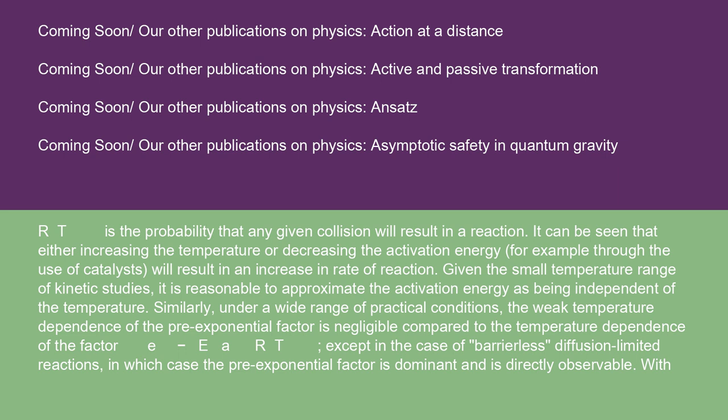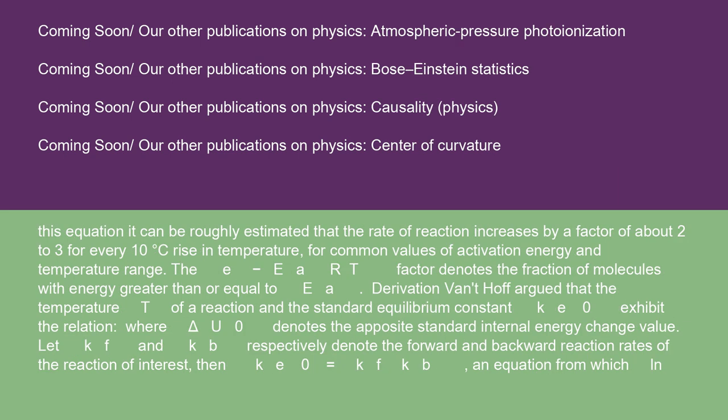It can be seen that either increasing the temperature or decreasing the activation energy, for example, through the use of catalysts, will result in an increase in rate of reaction. Given the small temperature range of kinetic studies, it is reasonable to approximate the activation energy as being independent of the temperature. Similarly, under a wide range of practical conditions, the weak temperature dependence of the pre-exponential factor is negligible compared to the temperature dependence of the factor e^(-Ea/RT), except in the case of barrierless diffusion-limited reactions, in which case the pre-exponential factor is dominant and is directly observable. With this equation, it can be roughly estimated that the rate of reaction increases by a factor of about 2 to 3 for every 10 degrees Celsius rise in temperature, for common values of activation energy and temperature range. The e^(-Ea/RT) factor denotes the fraction of molecules with energy greater than or equal to Ea.